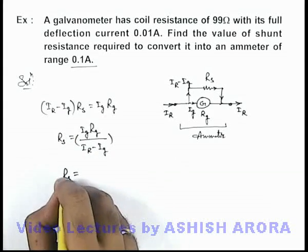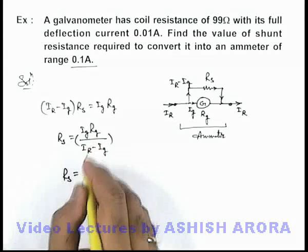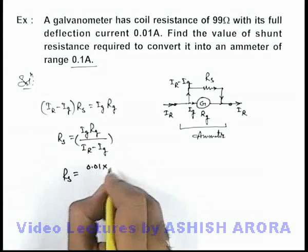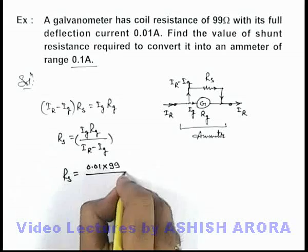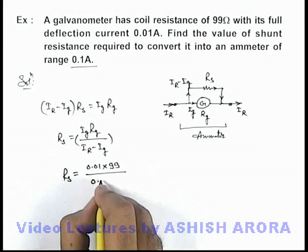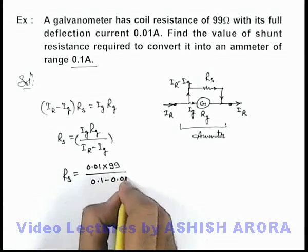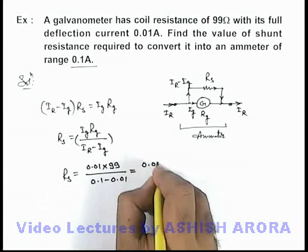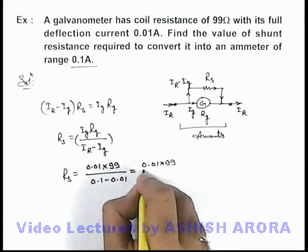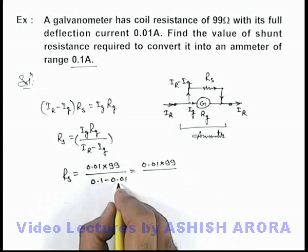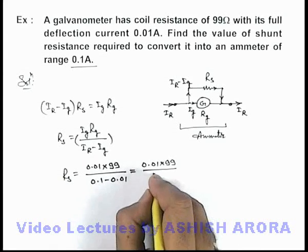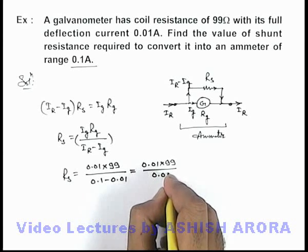And here the value of Rs can be calculated just by substituting all values. Here Ig is 0.01, Rg is 99, divided by it is 0.1 minus 0.01. So here you can see the numerator is 0.01 times 99 divided by, here denominator we are getting 0.1 minus 0.01 is 0.09.